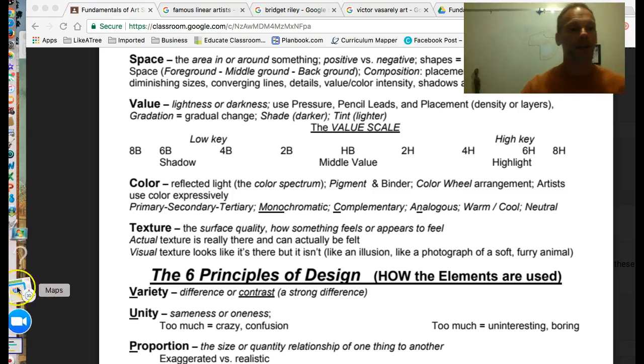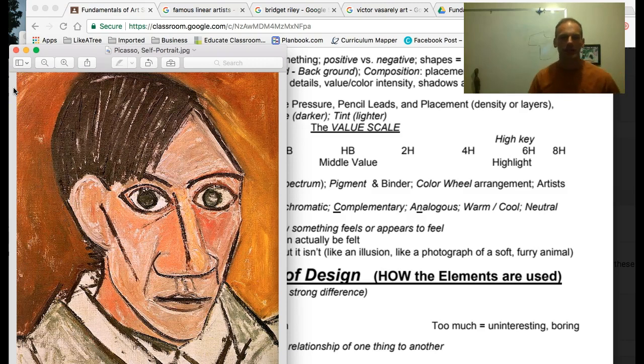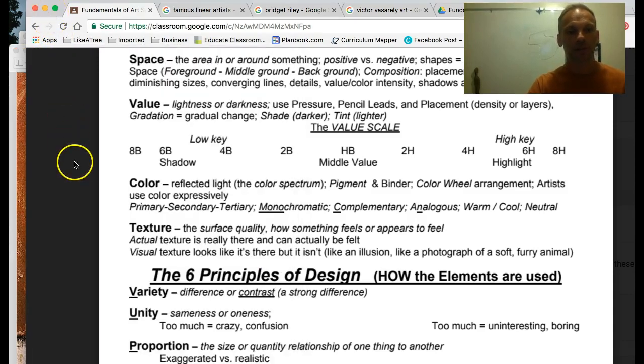An example of that might be that portrait that we looked at earlier of Picasso. There's the figure, his head and shoulders, there's the area within that figure, and then there's the area or space outside that area, the background, so to speak. So when we speak of space, we can be referring to two-dimensional space or three-dimensional space.